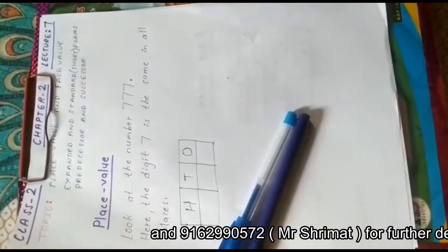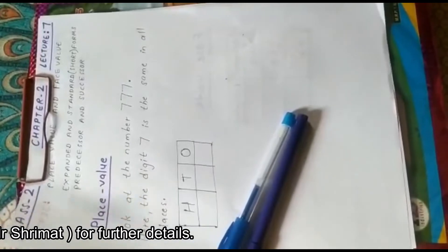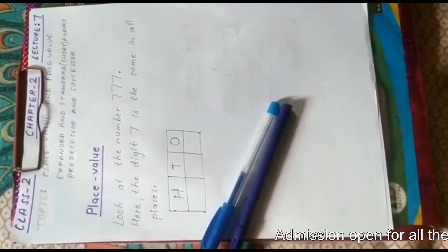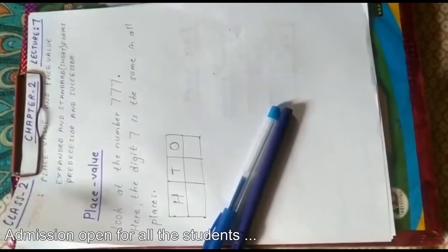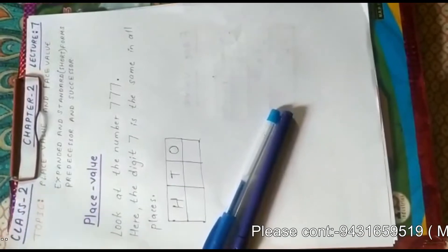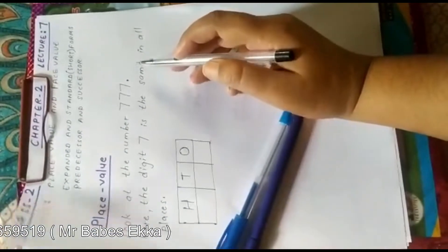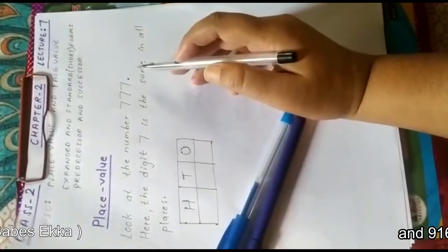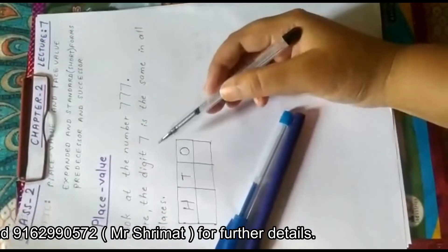So children, what do you know about place value? The value of a digit based on its place is known as its place value. The position of a digit in a number is known as its place. If we look at the number 777, the digit 7 is the same in all the places.